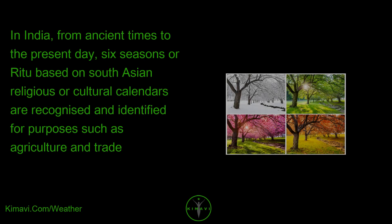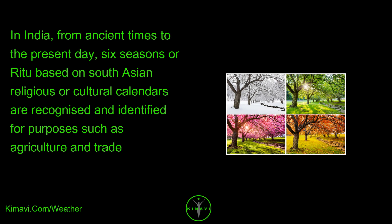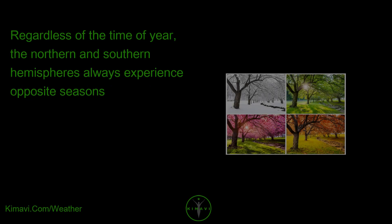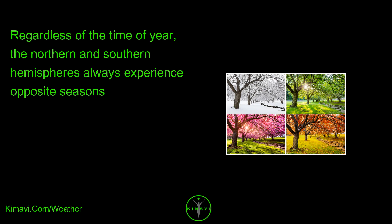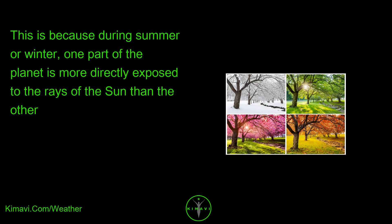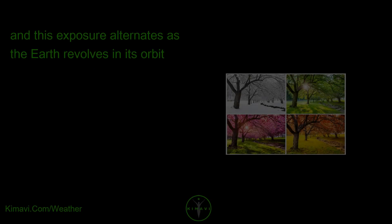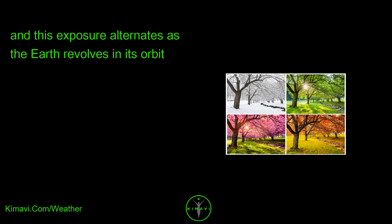In India, from ancient times to the present day, six seasons, or Ritu, based on South Asian religious or cultural calendars are recognized and identified for purposes such as agriculture and trade. Regardless of the time of year, the northern and southern hemispheres always experience opposite seasons, because during summer or winter, one part of the planet is more directly exposed to the rays of the sun than the other, and this exposure alternates as the Earth revolves in its orbit.